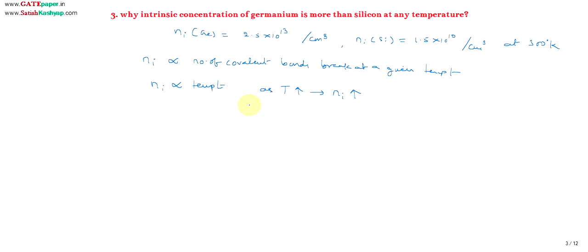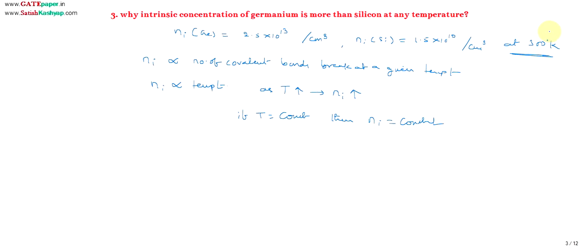If temperature is constant, then Ni is also constant. That is why at room temperature, which is a constant temperature, you are applying a constant thermal energy. Because of that constant thermal energy, a constant number of covalent bonds will break — giving the values we stated for germanium and silicon.